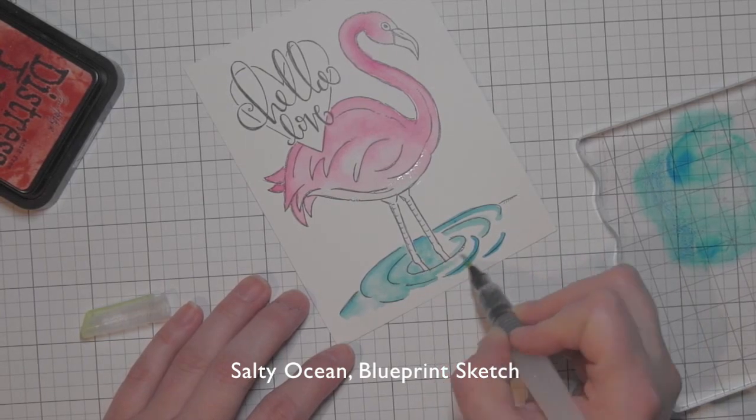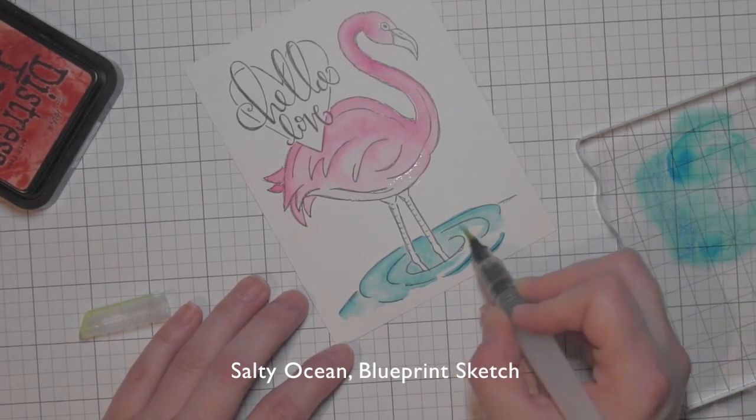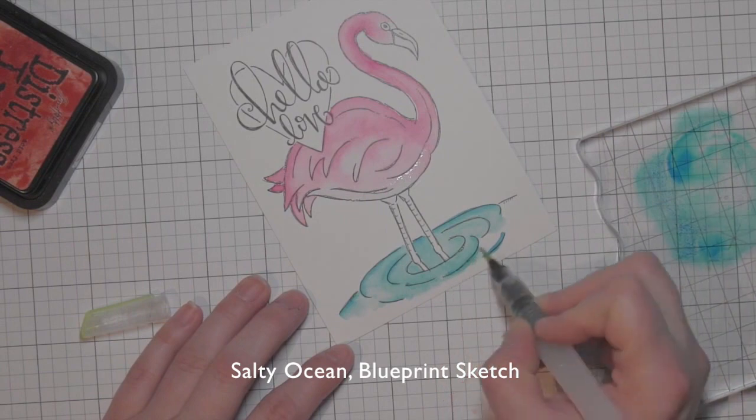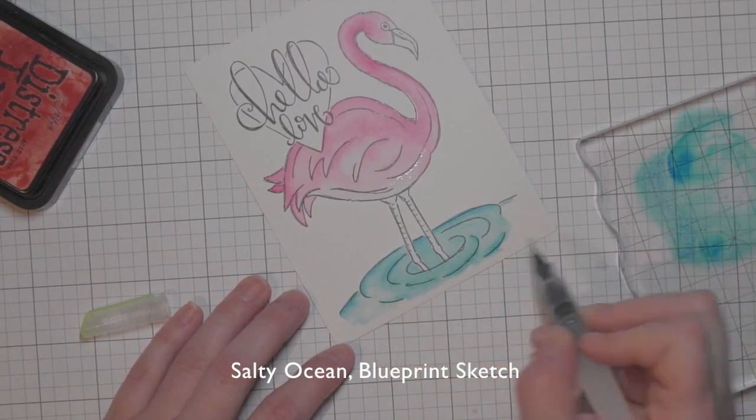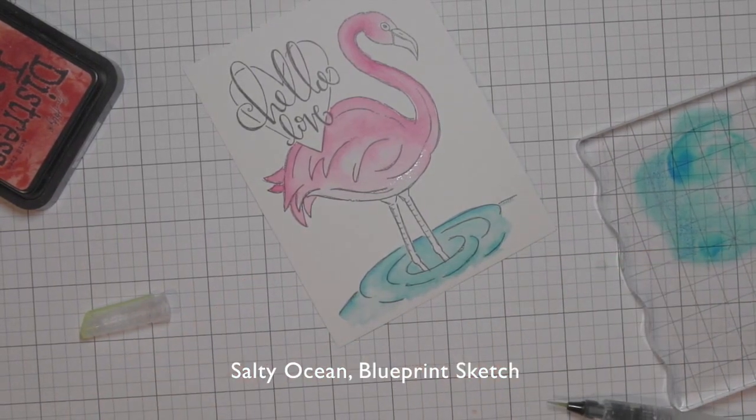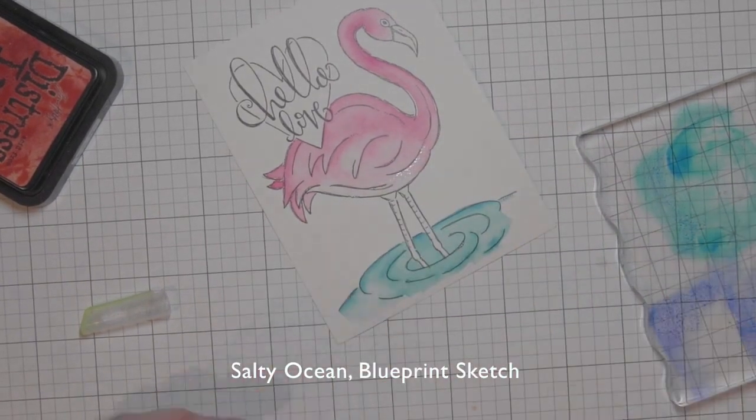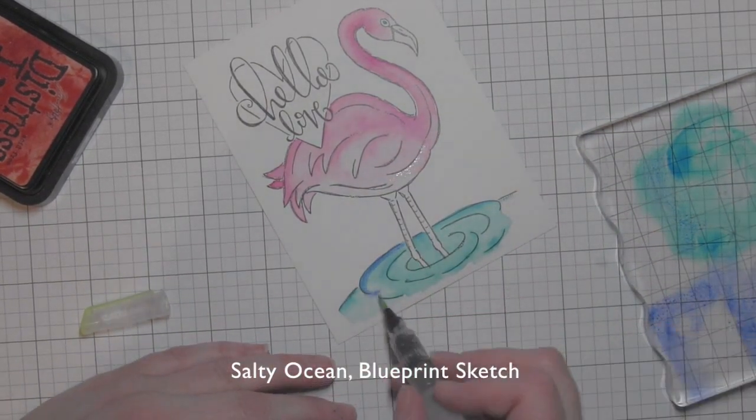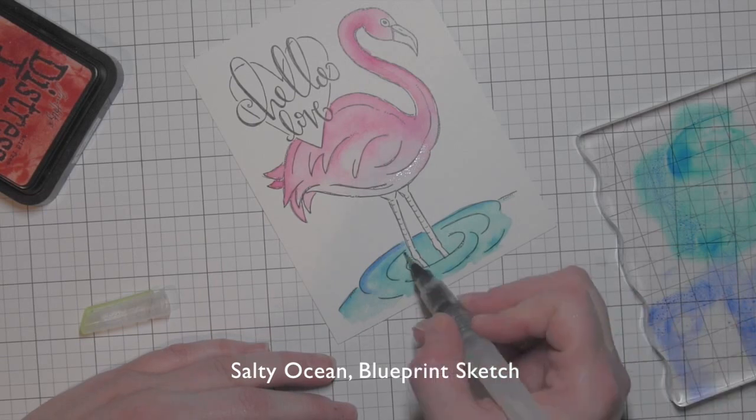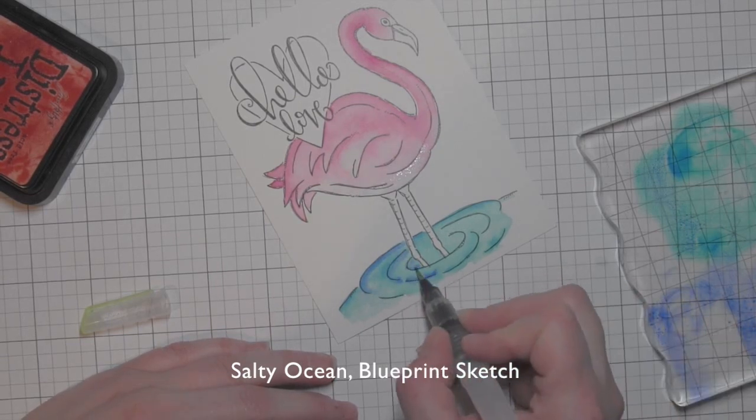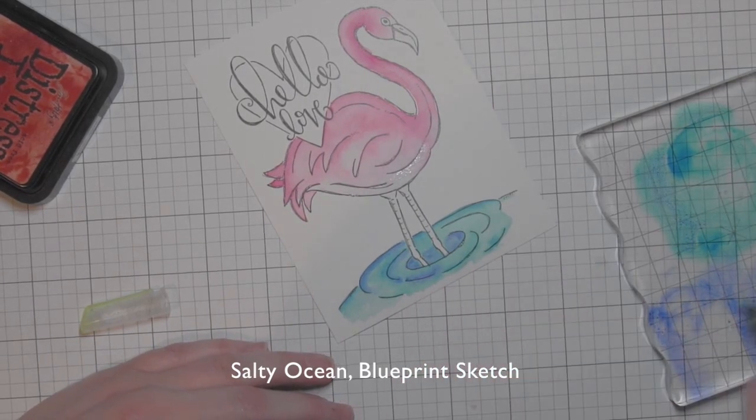You could always hit it with a heat gun to speed it up, but I like to let it air dry. So I move from one area to another to limit the chance of the inks bleeding and blending into one another.